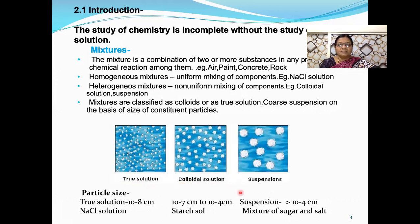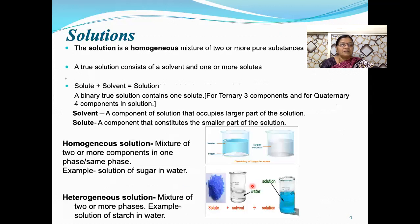A suspension has particle size greater than 10⁻⁴ cm in diameter; example is a mixture of sugar and salt. These colloidal solutions and suspensions are two types of heterogeneous mixtures that you have already studied in the chapter on adsorption and colloids. A solution is defined as the homogeneous mixture of two or more pure substances. In this chapter, we are mainly dealing with true solutions.